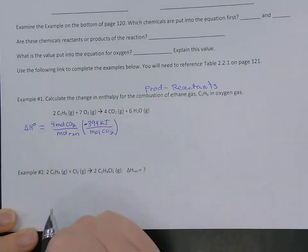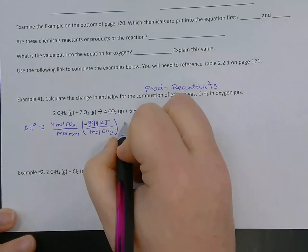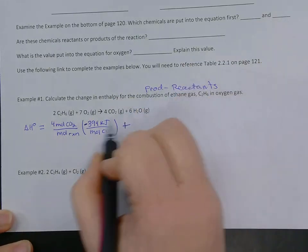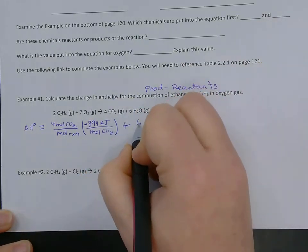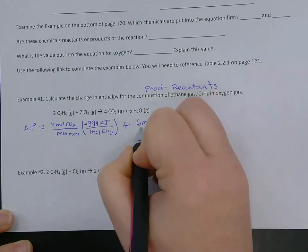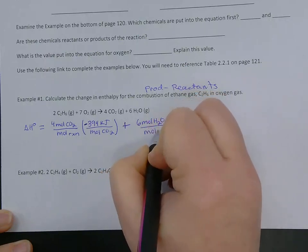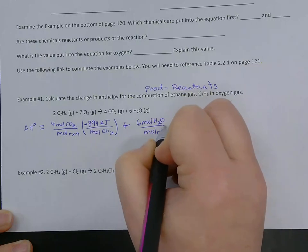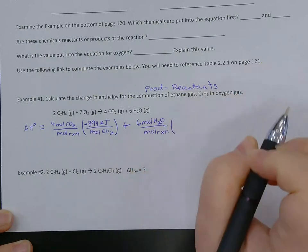So that's our first one, carbon dioxide. We are going to add to that the same thing for water. So six moles of water per mole reaction. So for every time the reaction occurs, we have six moles of water, times its value from the table.